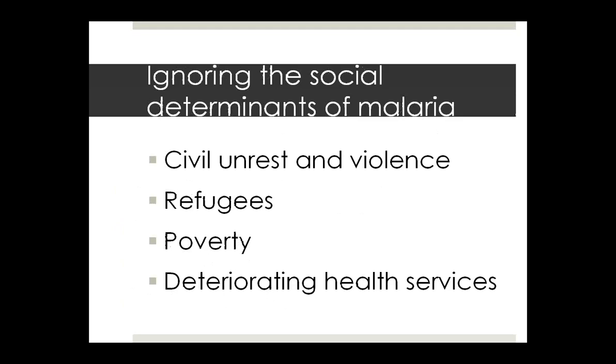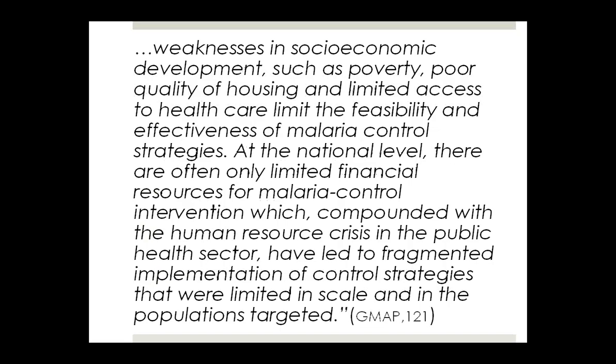In addition, what's going on almost totally ignores the underlying social determinants of malaria despite what's said on paper. The Global Malaria Eradication Plan's entire 300-page document contains only one statement acknowledging that weaknesses in socioeconomic development — such as poverty, poor quality housing, and limited access to healthcare — limit the feasibility and effectiveness of malaria control strategy. Very little is done as a result of the projects that come out of that plan.